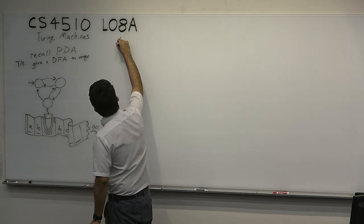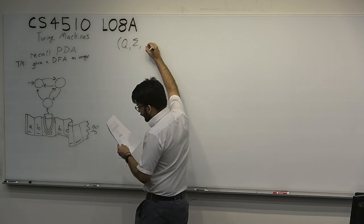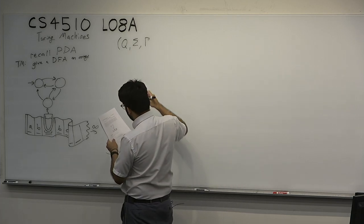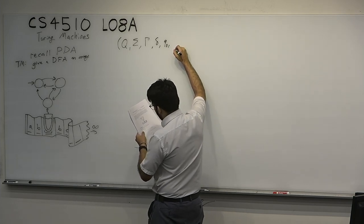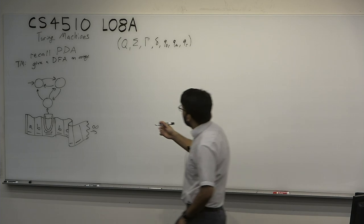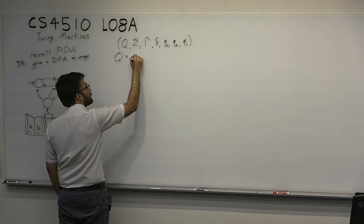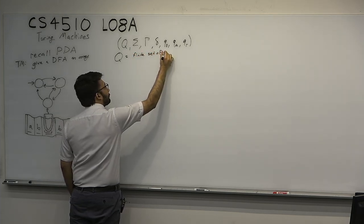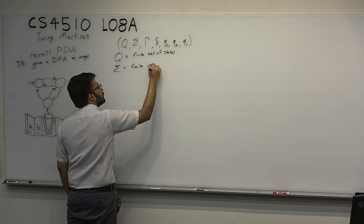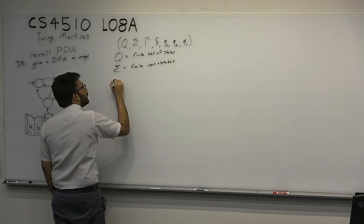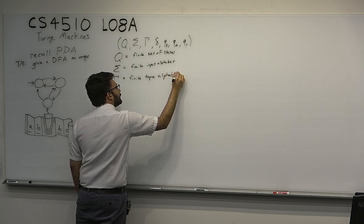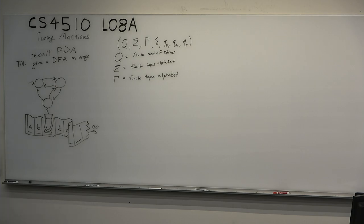Now, to give the formal definition: it's going to be Q, Σ, Γ, δ, Q0, QA, and QR. Q is a finite set of states. Σ is a finite input alphabet. Γ is a finite tape alphabet. Just like the PDA has an input and a stack alphabet, the Turing machine has a finite input and a finite tape alphabet.